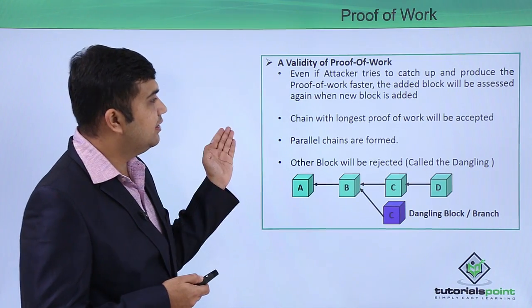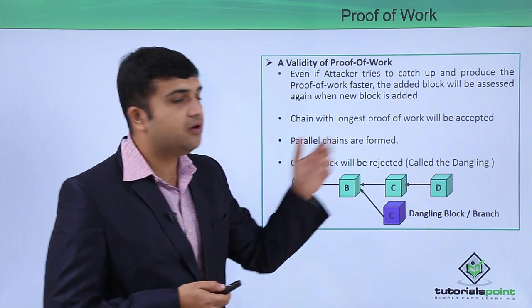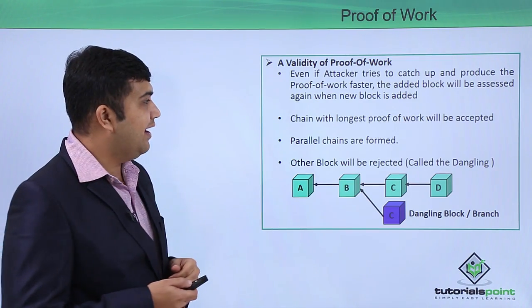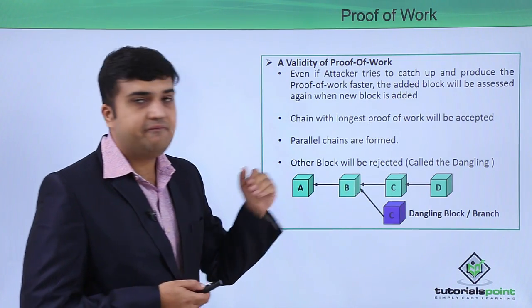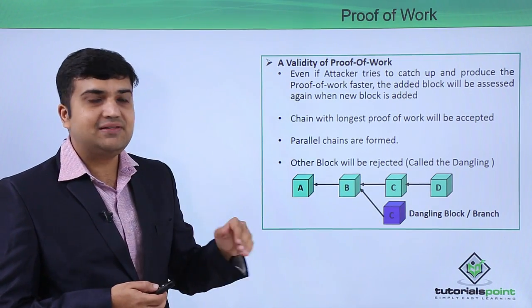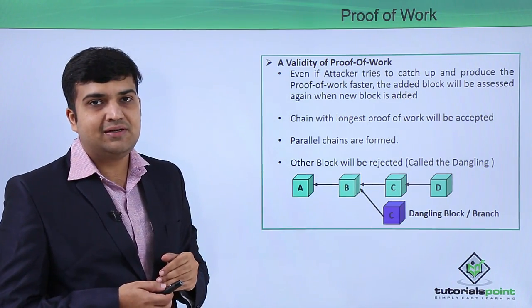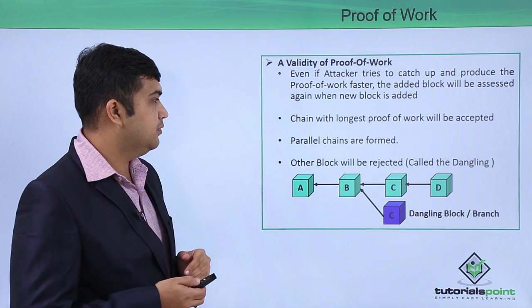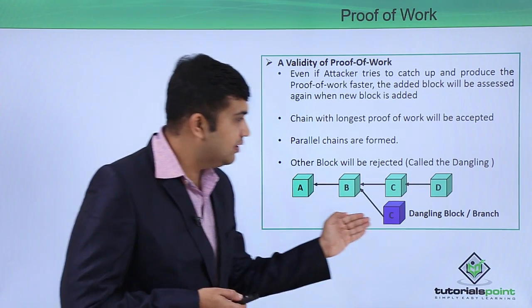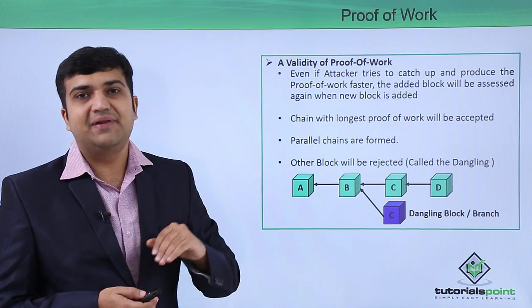In such cases, the chain with the longest proof of work will be accepted. Hence, those blocks which are not accepted will be considered as the dangling block, or if there are chains of blocks, then it will be considered as a dangling branch. Thus this copy of the block will be rejected.